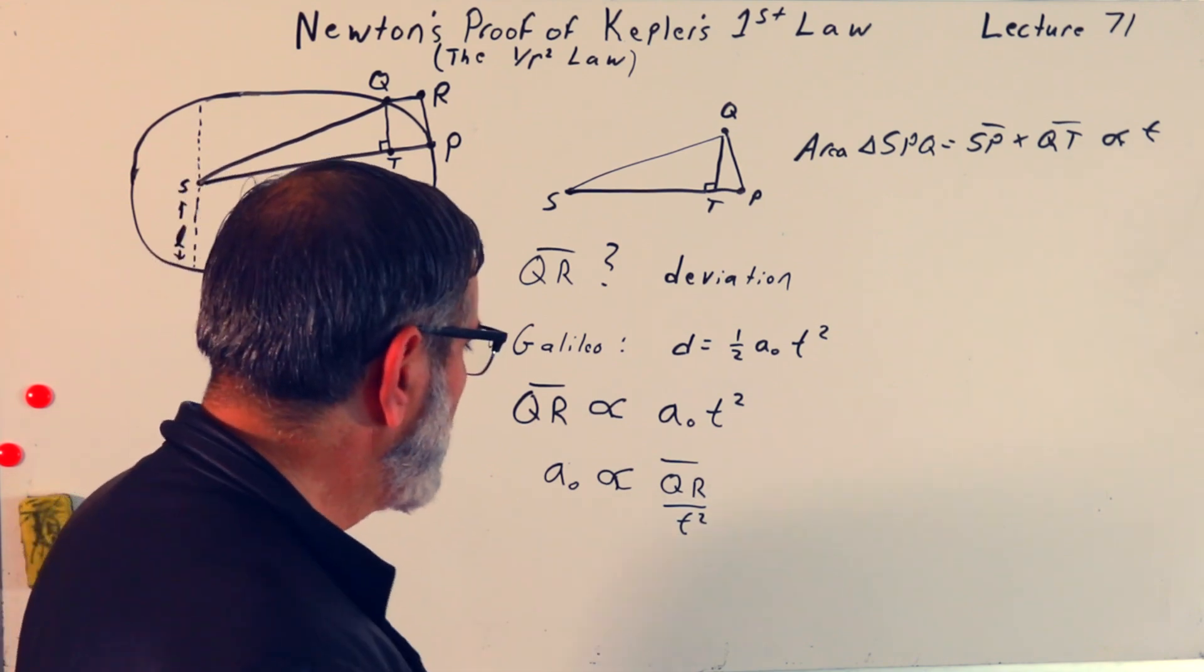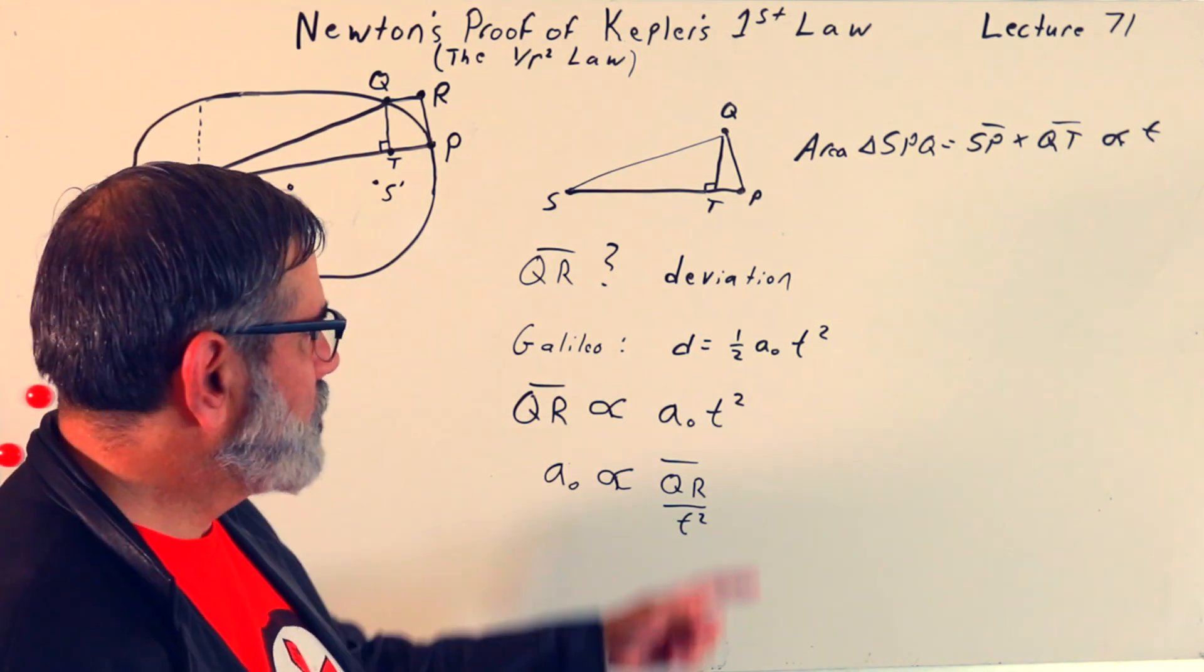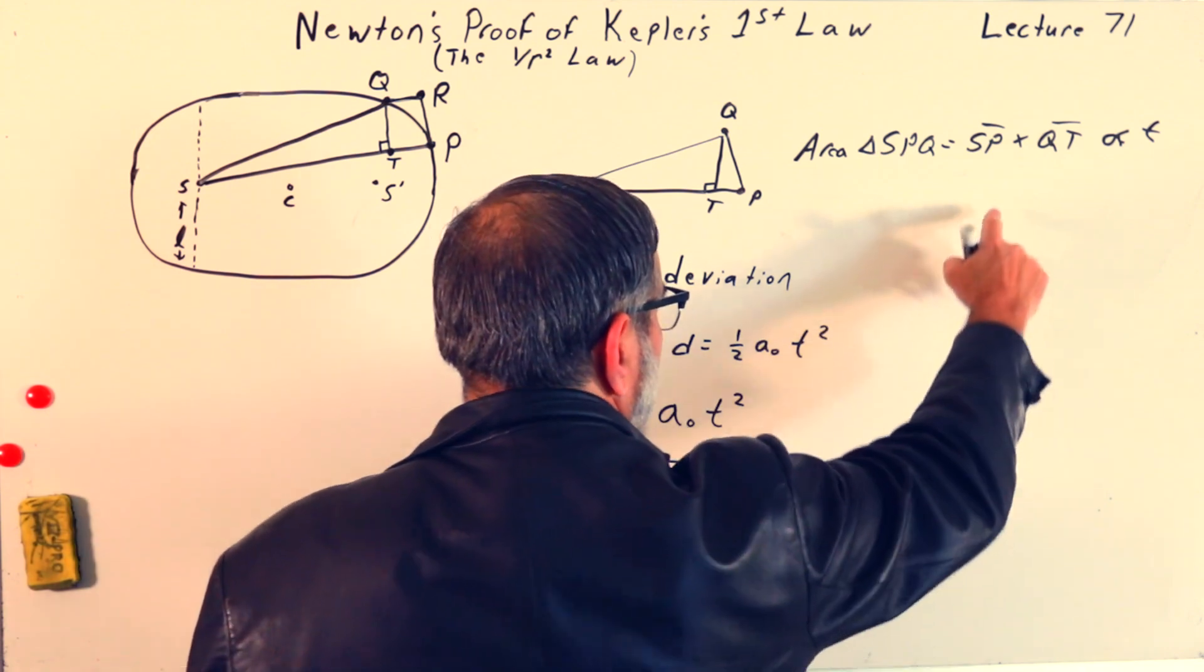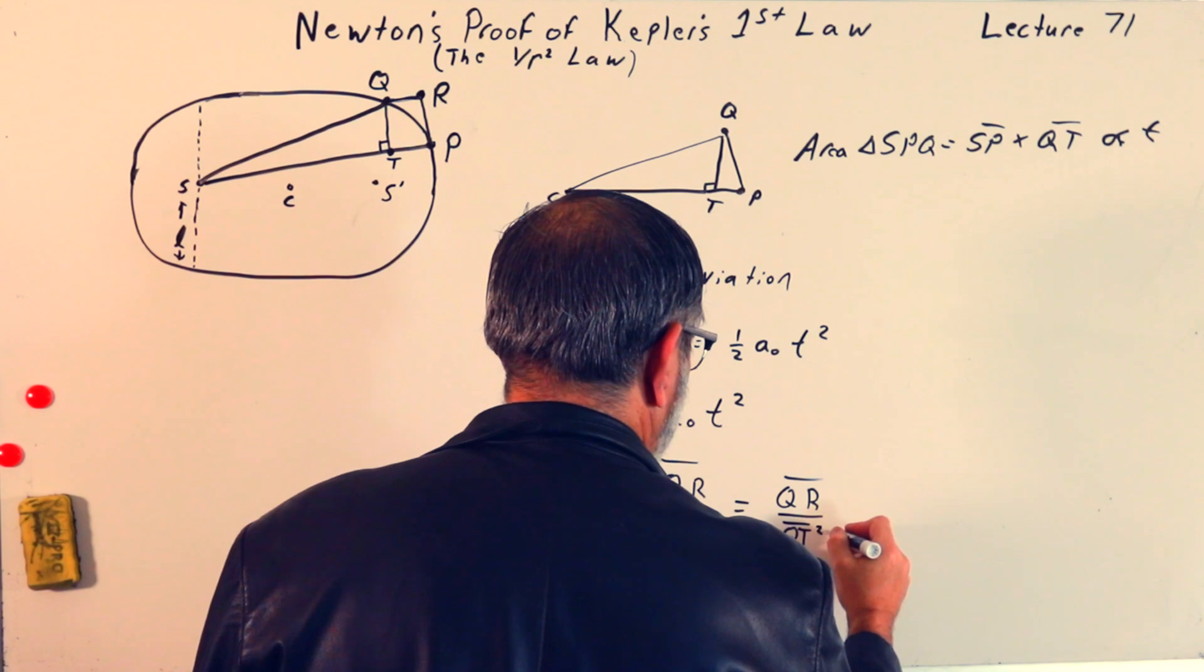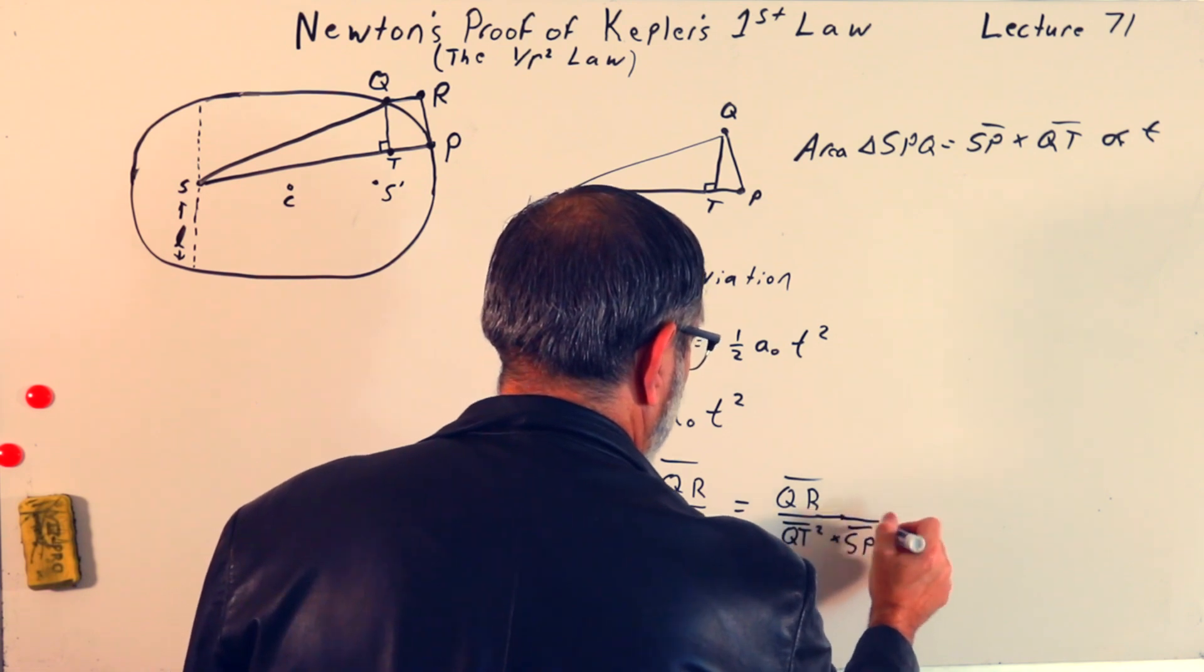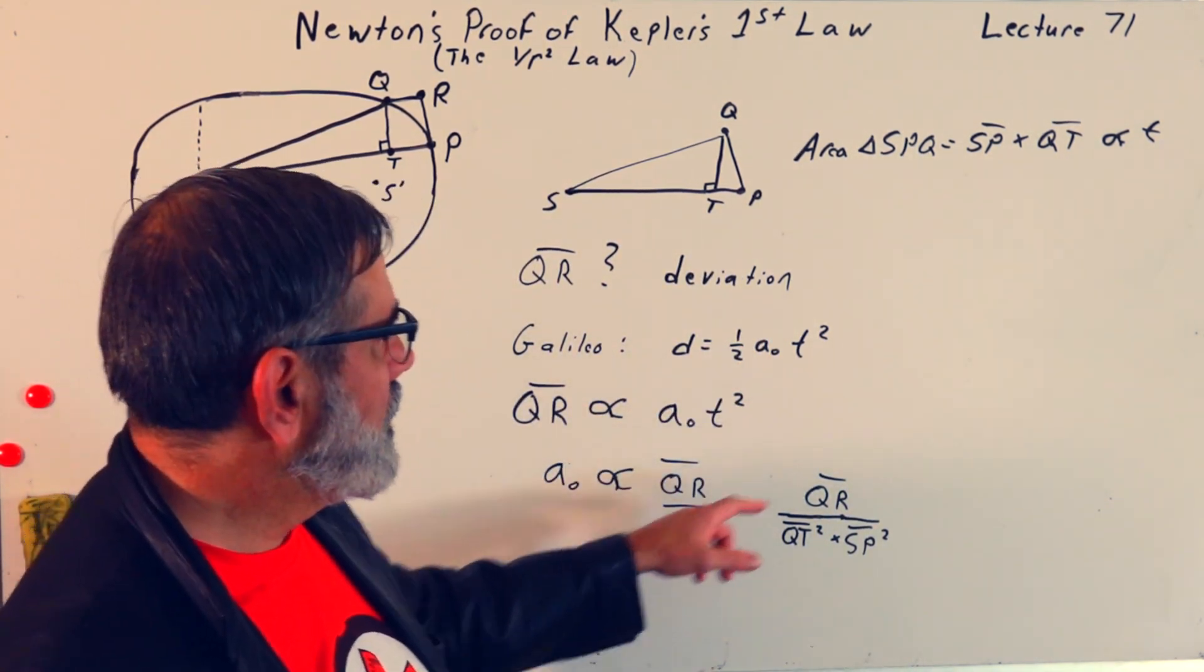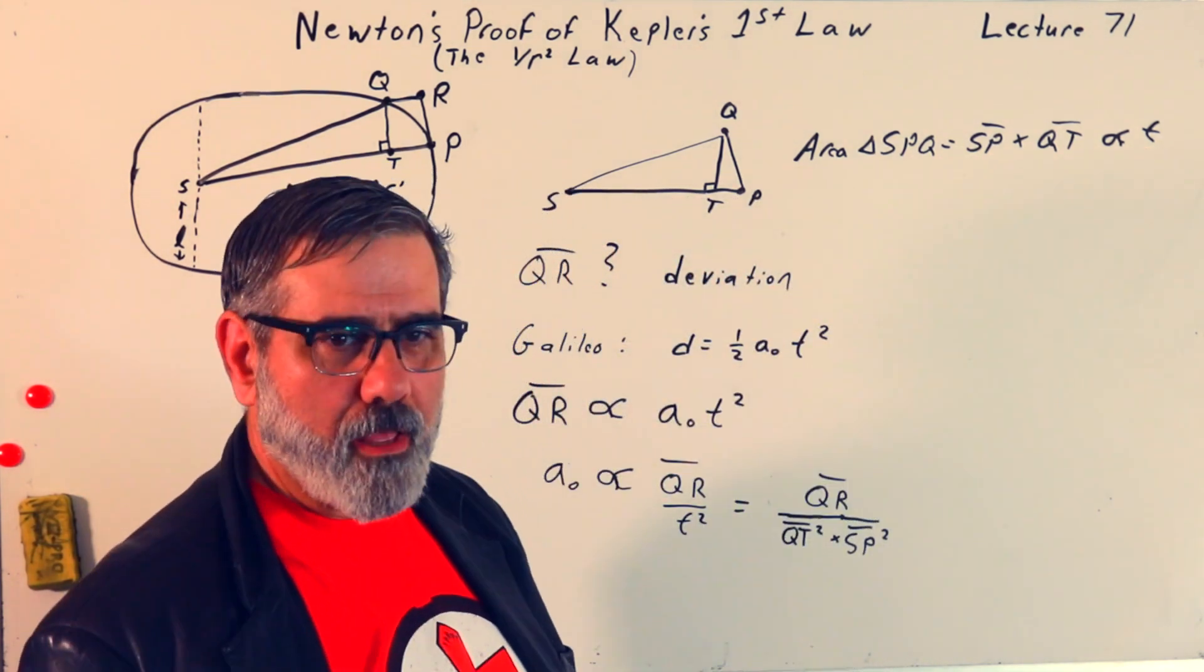So, what we can then write is that this deviation QR is proportional to A naught times T squared, where A naught is just this constant acceleration that we're assuming. Or another way to write this is that A naught is proportional to QR over T squared. All I've done is just algebraically manipulate that. But, wait a minute. T, we have a result for T. We know that T is proportional to SP times QT. That's what we said before from Theorem 1 or from Kepler's Second Law.